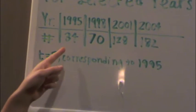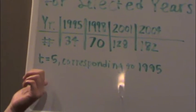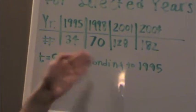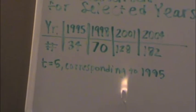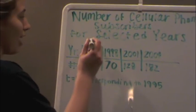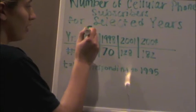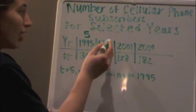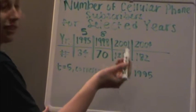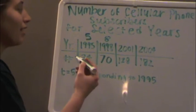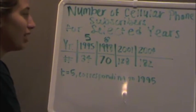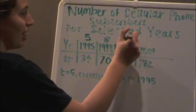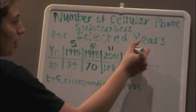Well, we're given that t equals 5 corresponding to 1995. So let's pretend that this number, instead of 1995, is the number 5. That would make 1998 equal 8, because that's 3 more than 5. And then 2001 would be 11, and 2004 would be 14.